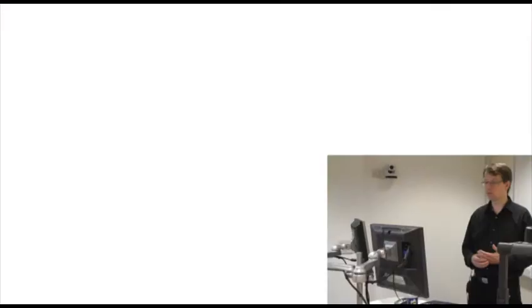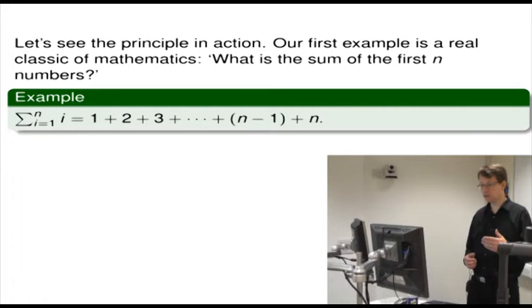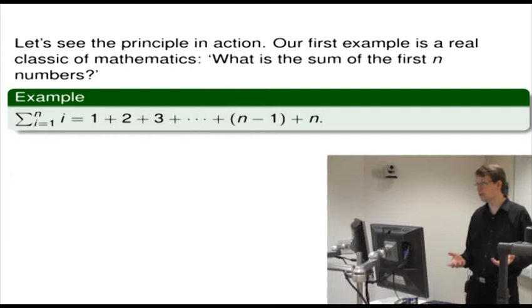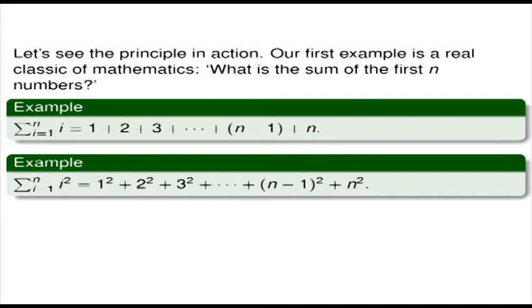Let's see the principle in action. Our first example is a real classic of mathematics: what is the sum of the first n numbers? I'll use the sigma notation — this funny zigzag symbol, which should be quite common if you're doing A-level. The sigma from i equals 1 up to n of i equals 1 plus 2 plus 3, all the way up to n. And if we wanted to sum the first n squares, we take the sum from i equals 1 up to n of i squared, giving 1 squared plus 2 squared plus 3 squared, all the way up to n squared. So sigma notation just means summation.